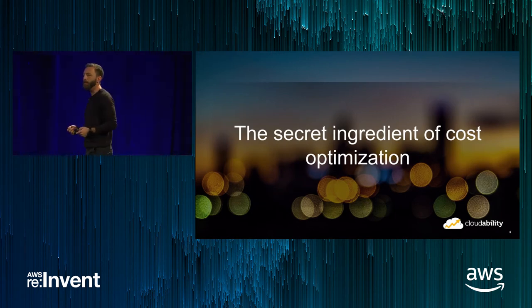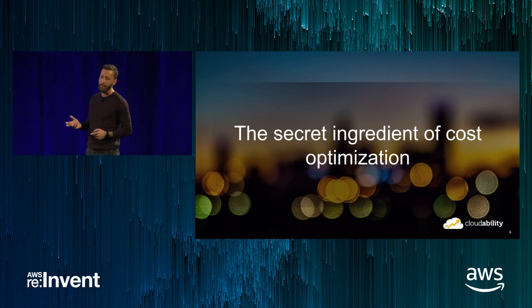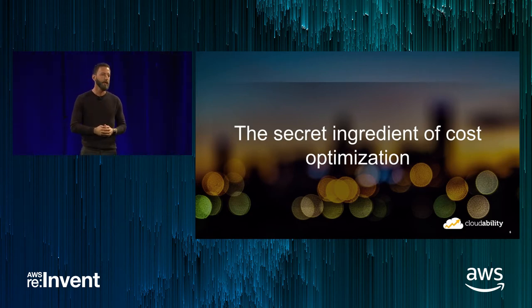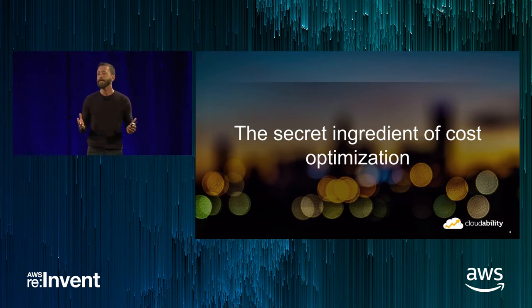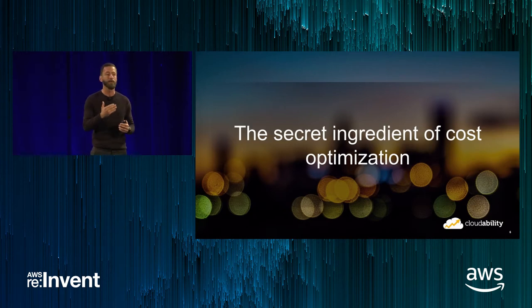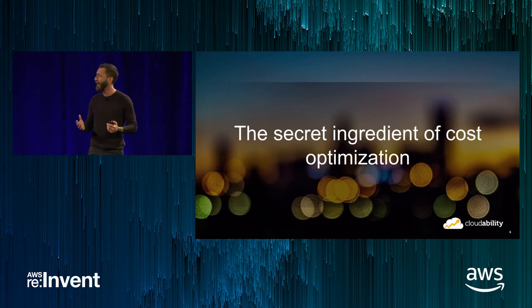So we're going to talk about where people usually start with that, and Mike's going to share the story of how Atlassian ended up at that spot. After that, I'll give you the basic fundamentals around how to start optimizing your rates and usage. Then we'll tie it together with Mike telling a detailed story about how Atlassian rolls this out to their teams, all metrics-driven at scale, and operationalizes it at a massive cloud spend level.